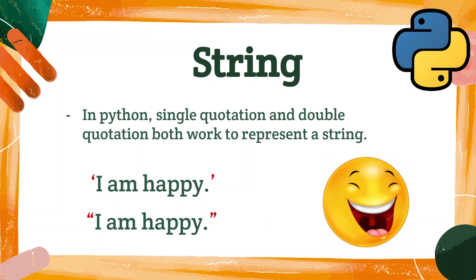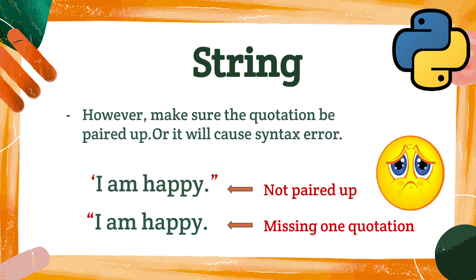Instead of using a list of chars, programmers invented a good way to define string. We use double quotations to indicate a string. Here comes the beauty of Python again. In Python, you do not need to worry about single quotations or double quotations — both work to represent a string.